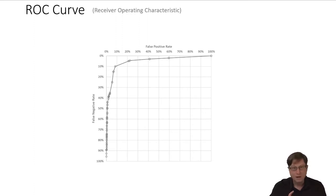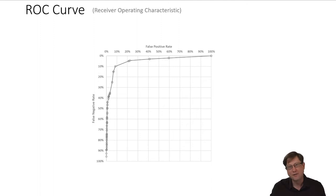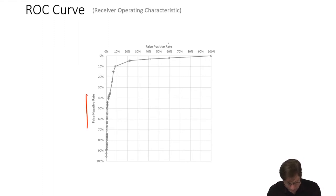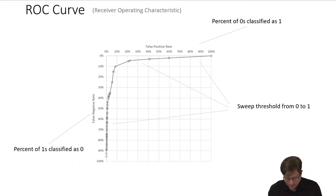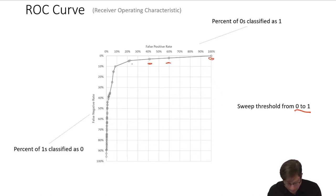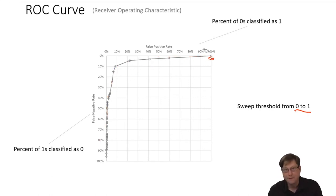Now let's talk about ROC curves. An ROC curve is a receiver operating characteristic curve. I didn't name it and I'm not sure why we still call it that. What it represents: here's the false negative rate and here's the false positive rate. The false negative rate is the percent of ones classified as zeros. The idea is that you sweep the threshold from zero to one, each point on the plot corresponds to one of the thresholds tried, and the resulting curve shows you all the trade-offs your model is able to achieve just by varying the threshold.